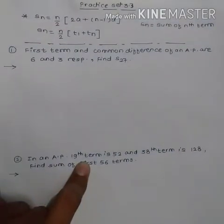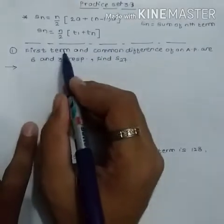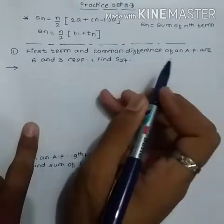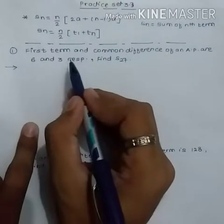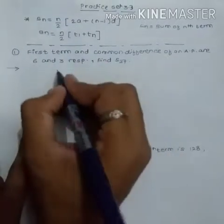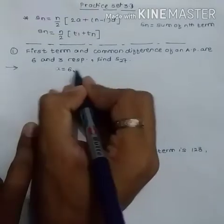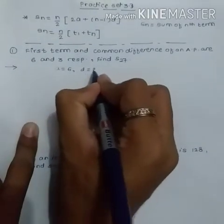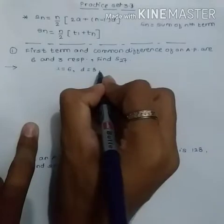First question: the first term and common difference of an AP are 6 and 3 respectively. So the first term a = 6 and common difference d = 3. We need to find S27.